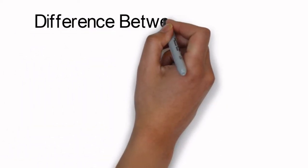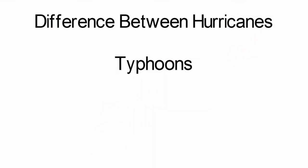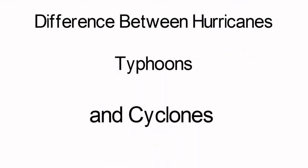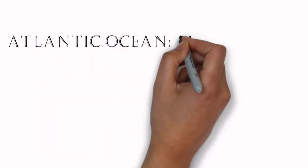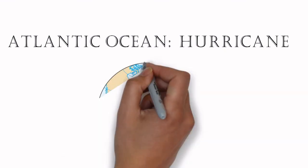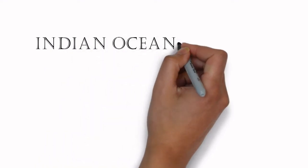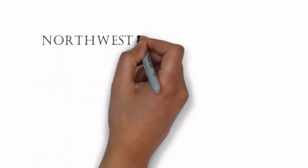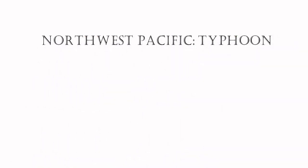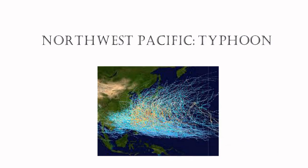Now we will see what is the difference between hurricanes, typhoons, and cyclones. There is no difference between hurricanes, typhoons, and cyclones. They are just named differently in different regions. In the Atlantic, it is called hurricanes. In the Indian Ocean, they are called cyclones. In the Northwest Pacific, they are called typhoons.